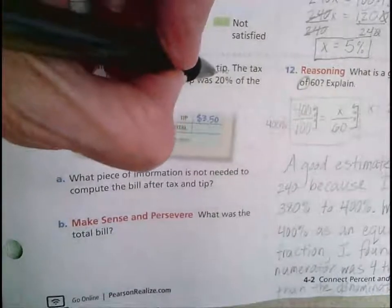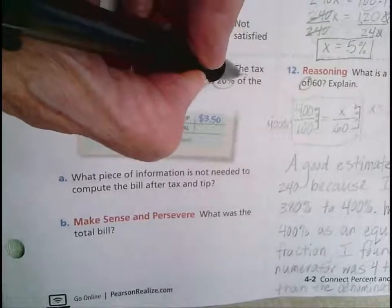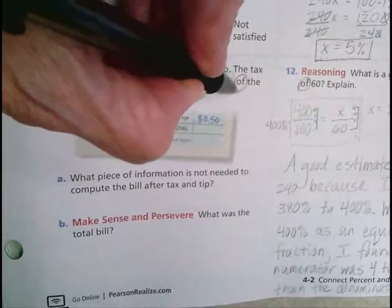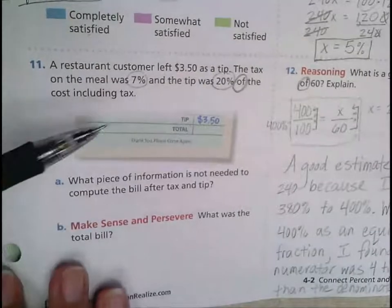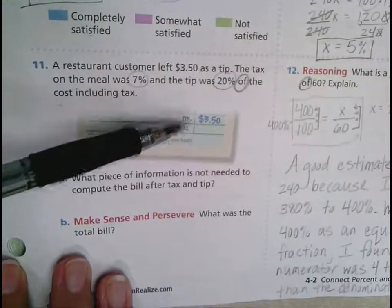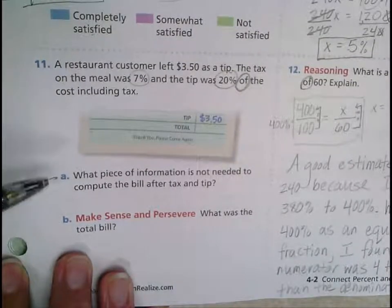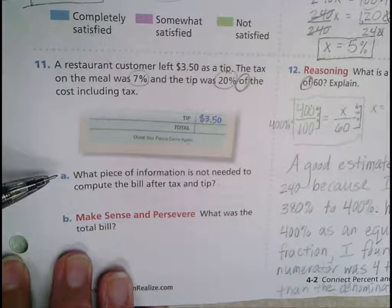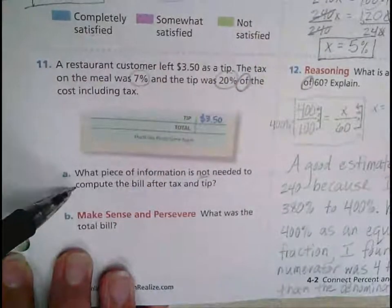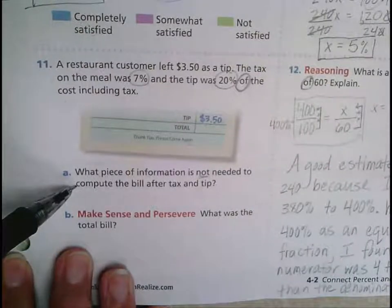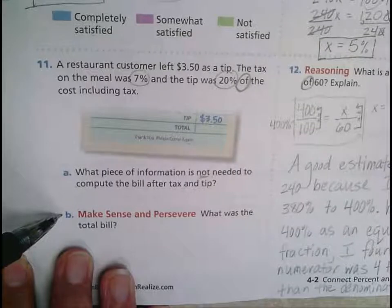Here I can see they're giving me a percent and a percent, and there's that word 'of'. So I'm going to mark those. They show us the bottom part of the bill and there are two parts to this question: A, what piece of information is not needed to compute the bill after tax and tip, and B, what was the total bill?